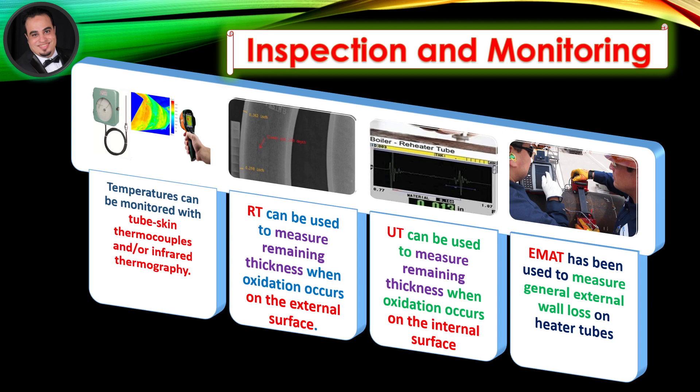Inspection and monitoring. Temperatures can be monitored with tube skin thermocouples and/or infrared thermography. RT can be used to measure remaining thickness when oxidation occurs on the external surface. Electromagnetic acoustic transducer (EMAT) has been used to measure general external wall loss on heater tubes.